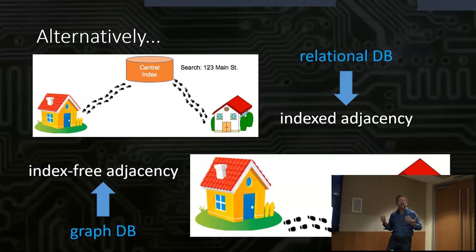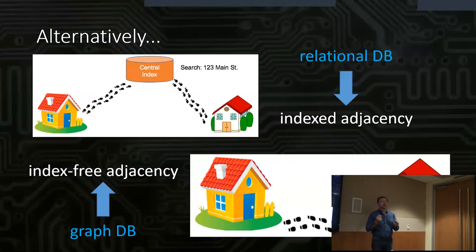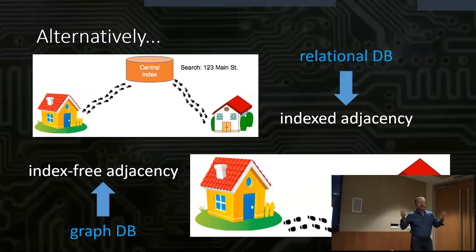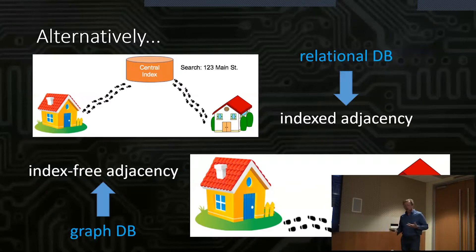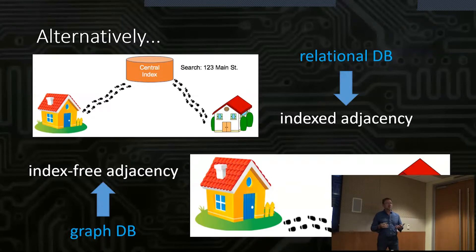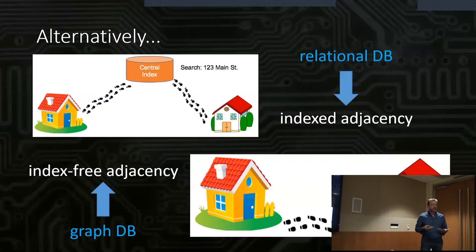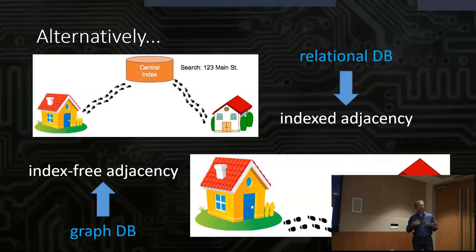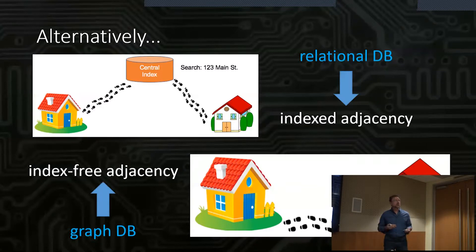This is generally how native graph databases work. A lot of people claim to have graph database capability — you're looking for the word native. A lot of people will layer graph database capability on top of a relational architecture and give you graph-like access, but underneath you've still got the same relational database.